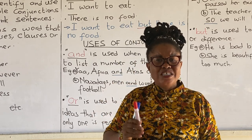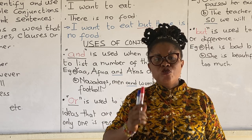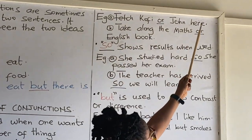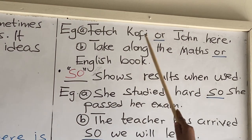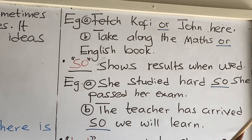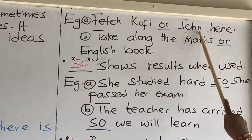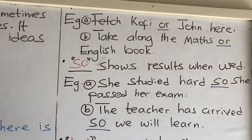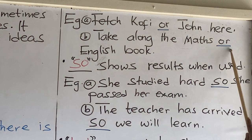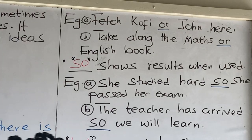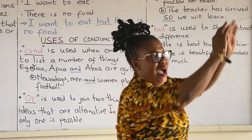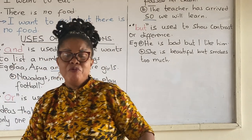When 'or' is used as a conjunction, it is referring to only one. Let's look at how 'or' is used in a sentence. First example: coffee or tea — we are referring to either coffee or tea, not the two of them. Second example: take along the maths or English book. It means you are to take maths or English, either one — not the two.